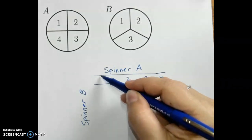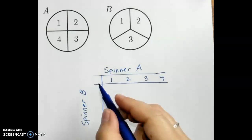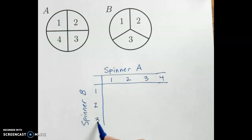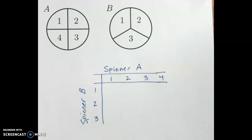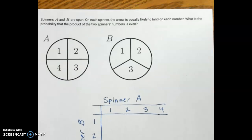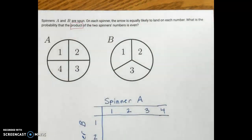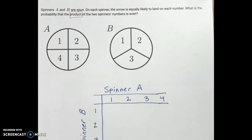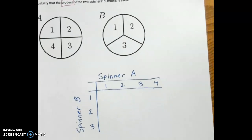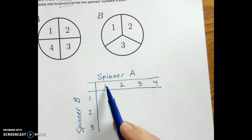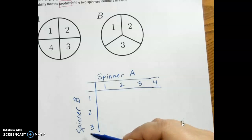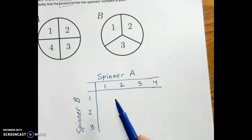When I spin spinner B, there are only three things that can happen: I can land on the one, the two, or the three. I'll put spinner B's values on the left-hand side. My array is going to look like a grid. In this problem, they are asking for the product of the two spinner numbers, so we need to remember that the product is what happens when we multiply two things together. What happens when we multiply those things together is what's going to be inside our array.